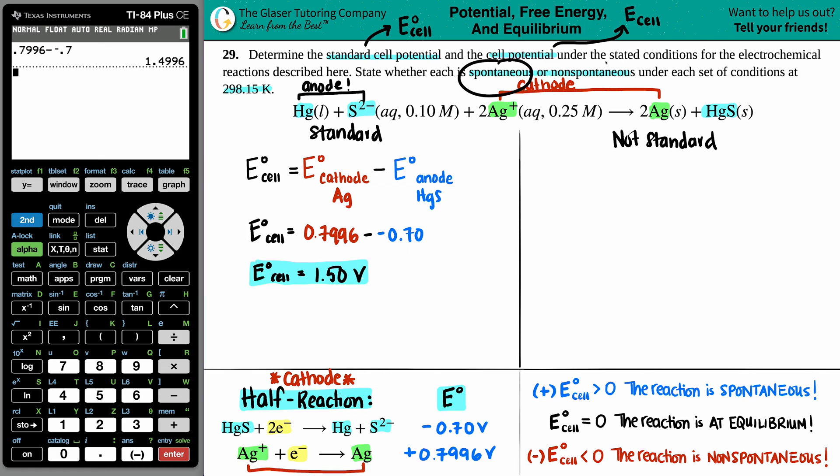Let's just say if that's spontaneous or non-spontaneous. That's just going by what you know about the signs. If you have a positive E cell value or an E cell that's greater than 0, that's spontaneous. But if you have a negative E value, that's non-spontaneous. So, since this 1.50 is a positive value, we know that this reaction is going to be spontaneous under standard conditions.